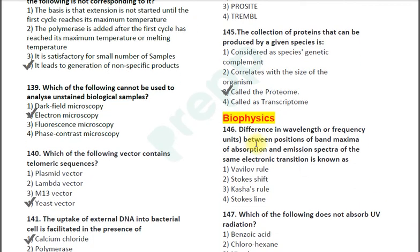Next questions are from Biophysics. Question number 146: Difference in wavelength or frequency units between positions of band maxima of absorption and emission spectra of the same electronic transition is known as — option 1: Vavilov rule; option 2: Stokes shift; option 3: Kasha's rule; option 4: Stokes line. The correct answer is Stokes shift.